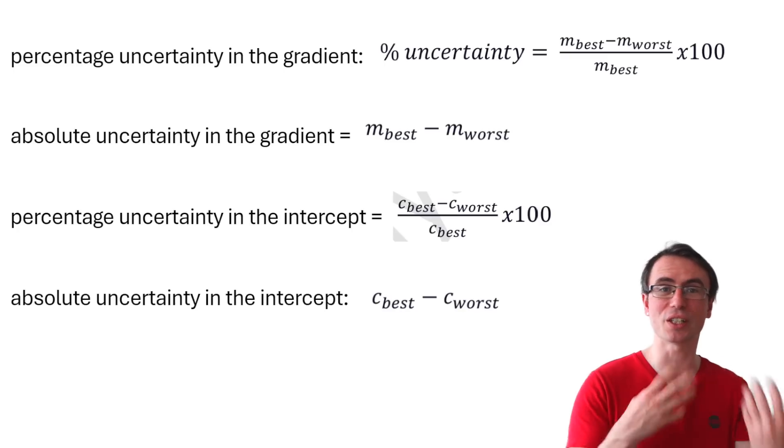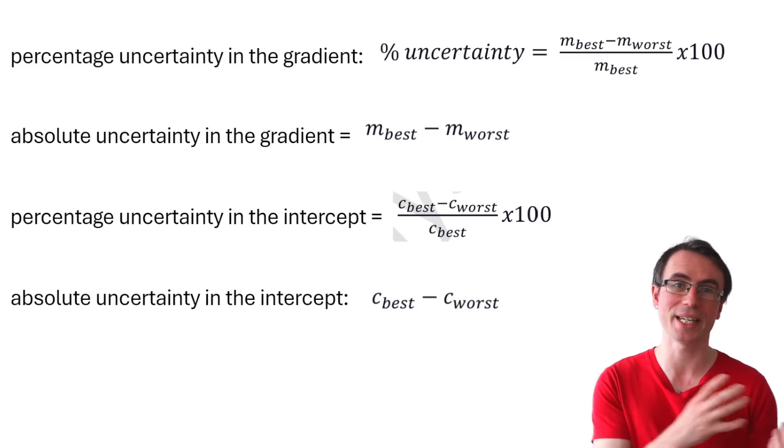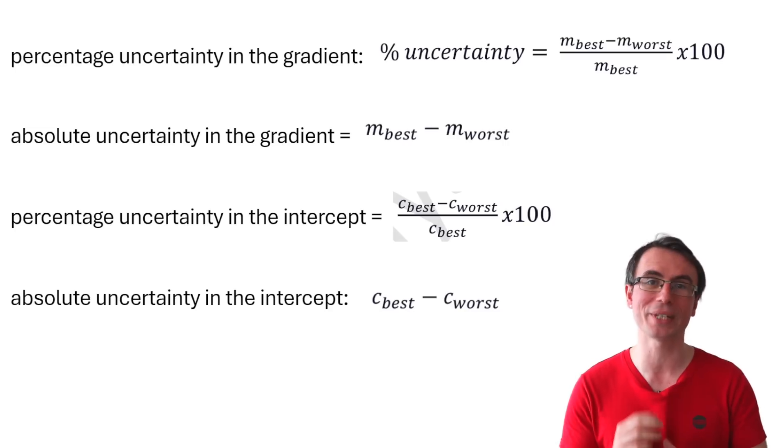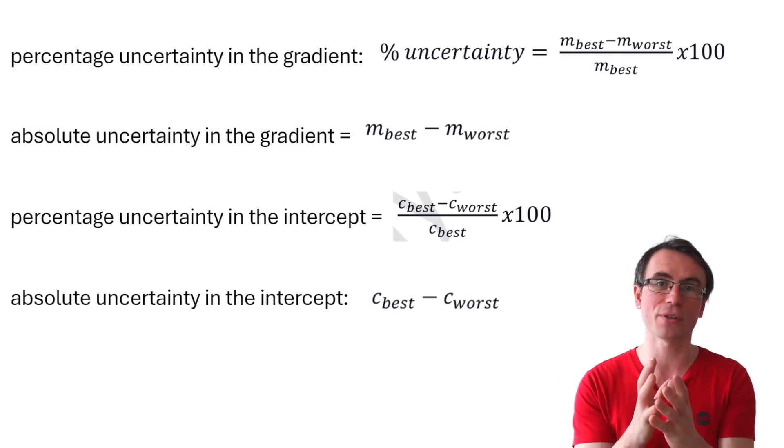If the line of worst fit appears in a question, chances are that they're probably going to ask us about the percentage uncertainty in the gradient or the intercept, and we can use these rules that we need to remember for the exam. They're not given in the formula booklet.